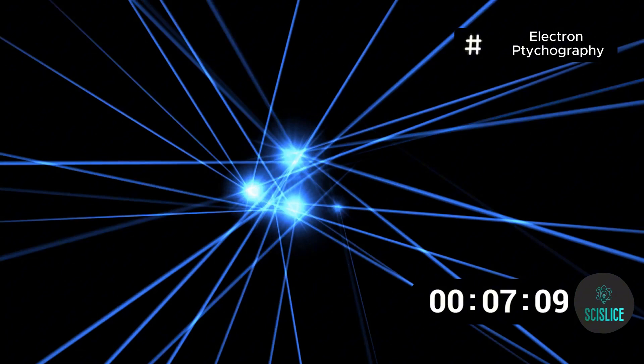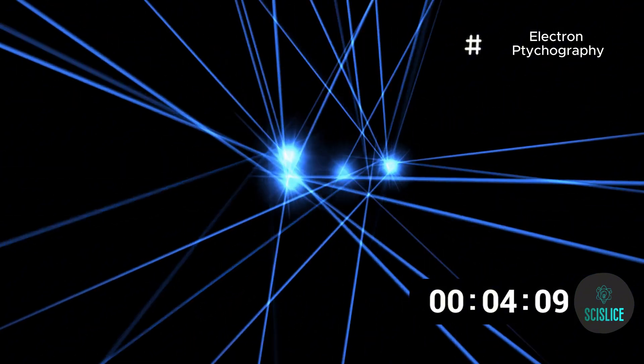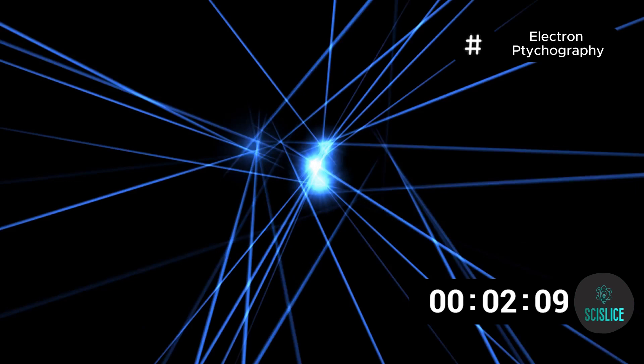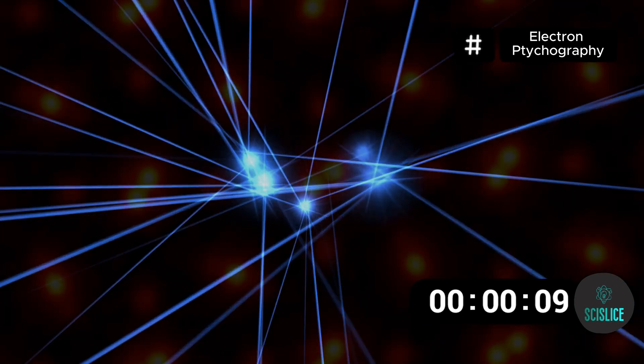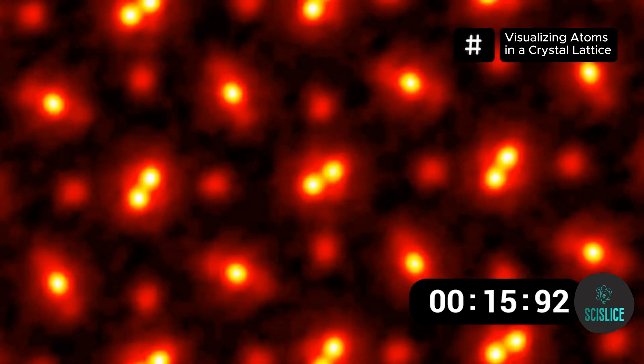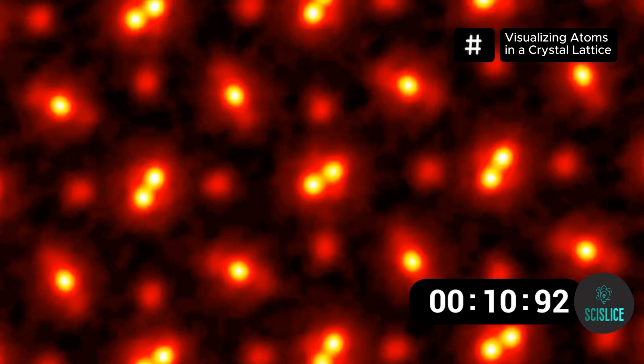By analyzing the pattern created by these scattered electrons, scientists can reconstruct an image of the atoms, revealing their precise locations. The dots you see in the image are the individual atoms of praseodymium orthoscandate arranged in a crystal lattice, each bright blob represents an atom.